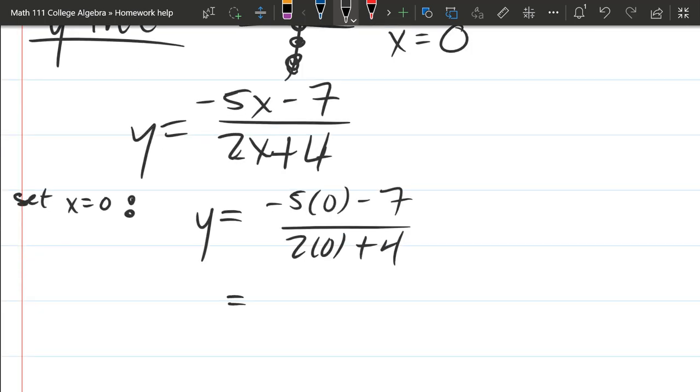Negative five times zero minus seven divided by two times zero plus four. Of course, those are both zero, so we get negative seven over four. And that's it for y.